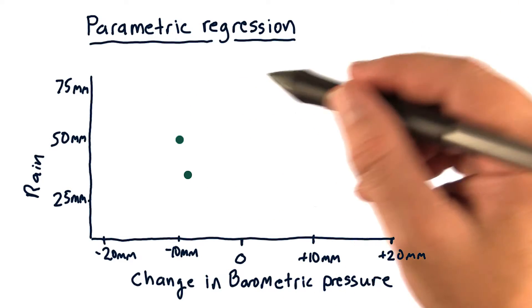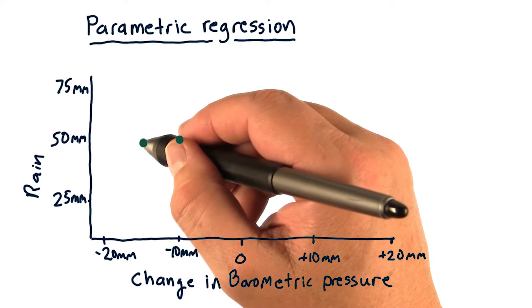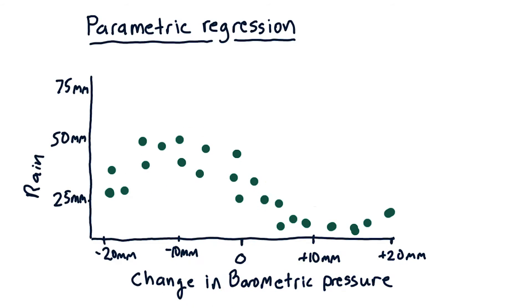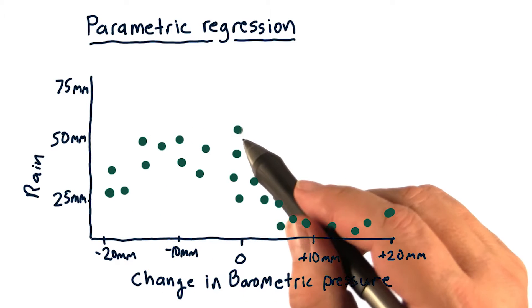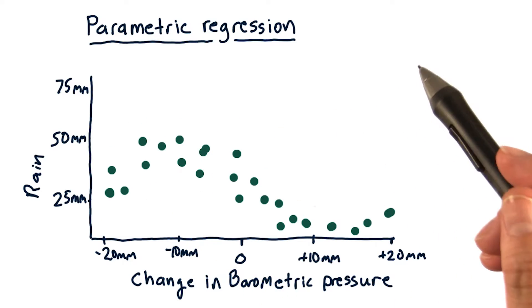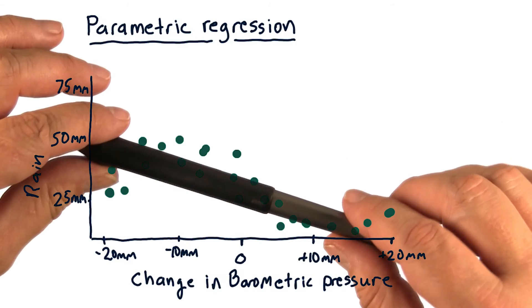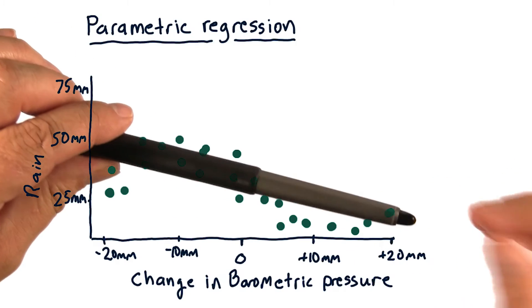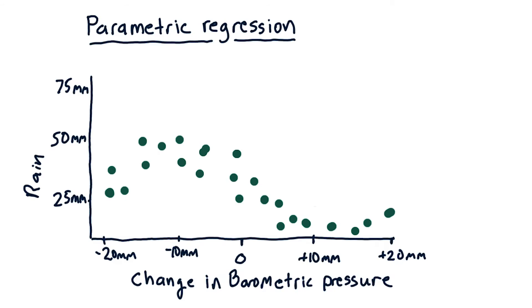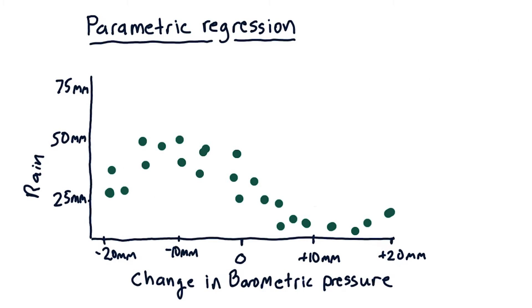Let's consider that over time, we collect data for many different days. Each one of these dots represents one day's worth of data. As you can see, there's a general trend: as barometric pressure decreases, we typically have more rain, and as it increases, we have less rain.